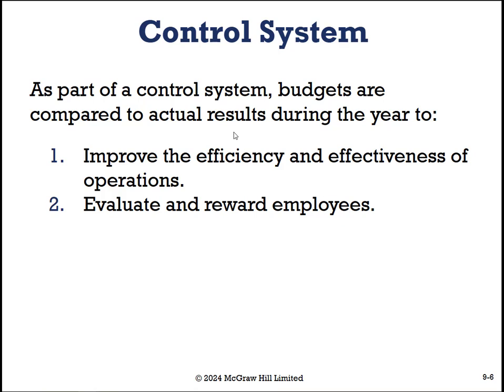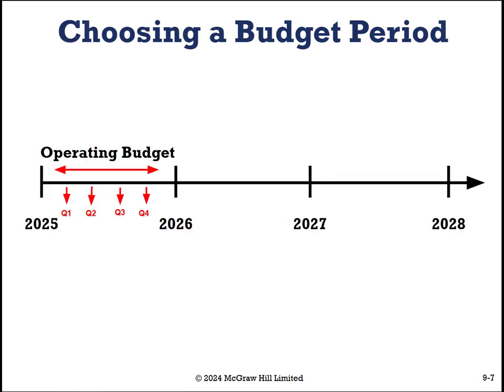Budgets are also often used to evaluate and reward employees. Did we lower costs relative to what we thought? Did we bring in more revenues? How did we do overall on net profit? So budgets can absolutely be used to motivate employees. A budgeting period tends to be annual but can also be divided into quarterly or monthly budgets, or a five-year plan broken into one-year, quarterly, and monthly budgets. A continuous budget is a 12-month budget that rolls forward one month or one quarter as the current period is completed.